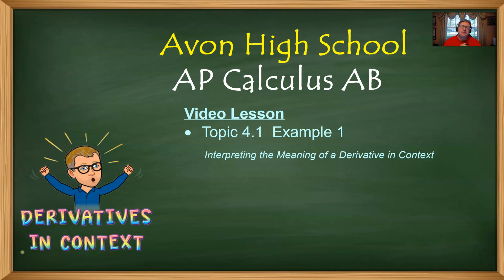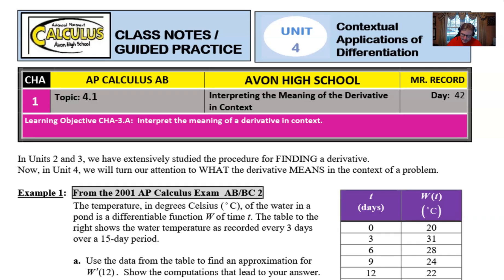Hello AP Calculus AB students, Mr. Record here from Avon High School and I'm very excited to start our next unit, Unit 4, which is all about the contextual meaning of a derivative. And with Topic 4.1, we're going to talk very specifically about what a derivative means in the context of a problem. So we're going to take a look at our first example here. The beginning of a new unit means we have a completely new banner with Unit 4, Contextual Applications.